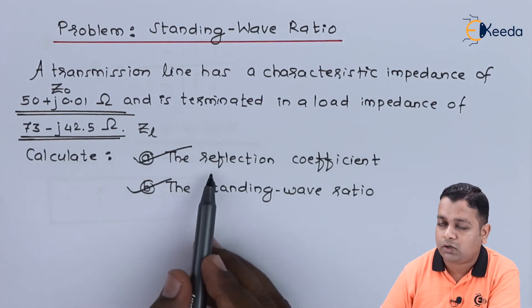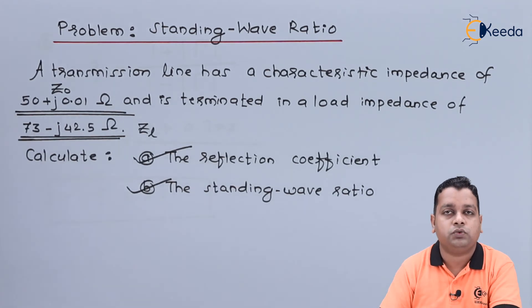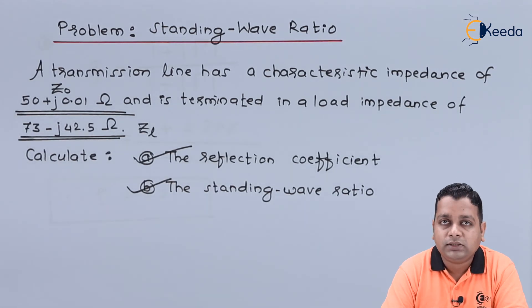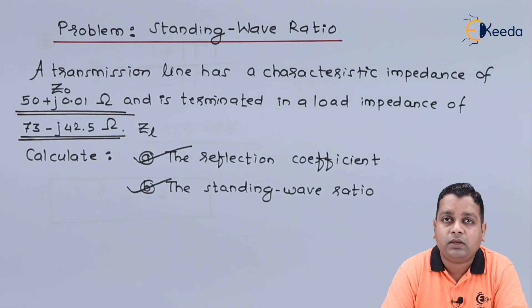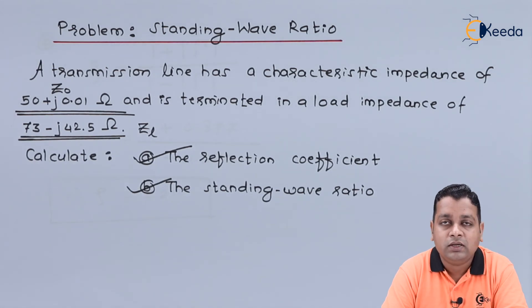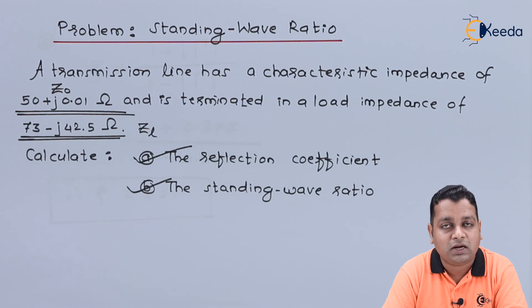We have finished determining the answers for part a and part b — the reflection coefficient and the standing wave ratio. In the next lecture we shall continue with the same chapter on microwave transmission lines, addressing the topic of line impedance and admittance. For more information on microwave engineering concepts, you can subscribe to the Ekida channel. Thank you.